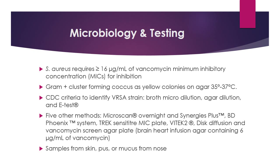So how does one know if they have VRSA? From a microbiological standpoint, Staphylococcus aureus requires greater than or equal to 16 micrograms per milliliter of vancomycin minimum inhibitory concentration for inhibition. Staph is gram positive, cluster-forming, and grows as yellow colonies on agar at 35 to 37 degrees Celsius. The CDC has established criteria to identify VRSA strains: broth micro dilution, agar dilution, and E-test.